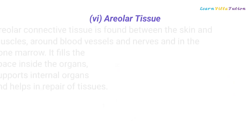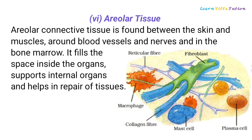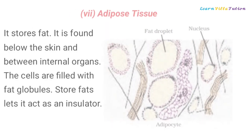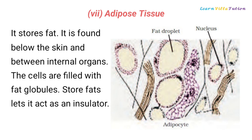Areolar connective tissue is found between the skin and muscles, around blood vessels and nerves, and in the bone marrow. It fills the space inside the organs, supports internal organs and helps in repair of tissues. Adipose tissue stores fat. It is found below the skin and between internal organs. The cells are filled with fat globules, and storing fat allows it to act as an insulator.